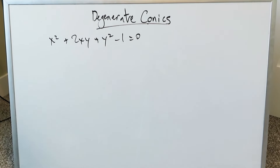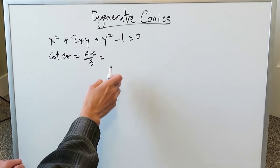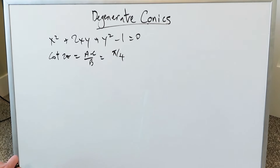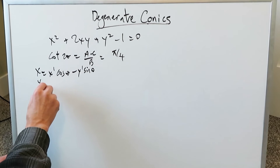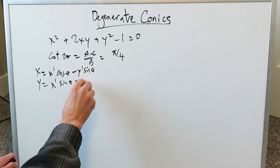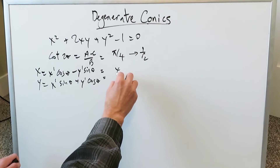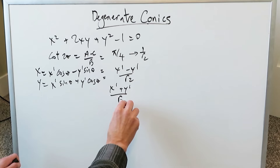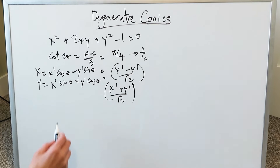Look at this next equation. To evaluate it, you first have to eliminate the xy term. Use cot(2θ) = (A minus C) over B: (1 minus 1) divided by 2 equals 0, so 2θ = π/2, giving θ = π/4. Then run through the rotation equations: x = x′cosθ minus y′sinθ, and y = x′sinθ plus y′cosθ. Since sine and cosine of π/4 are both 1/√2, you get x = (x′ minus y′)/√2 and y = (x′ plus y′)/√2. Substitute these into the original equation to eliminate the xy term.